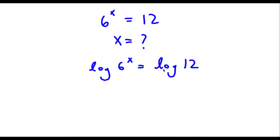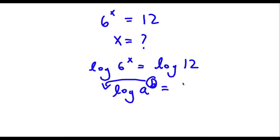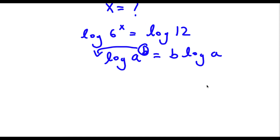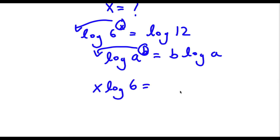Now an important property of logarithms is that if I have something in the form log a to the power of b, I can actually move this exponent b to the front of the logarithm. So this is equal to b times log a. So log 6 to the power of x — I can move the x to the front. So I have x times log 6 is equal to log 12.